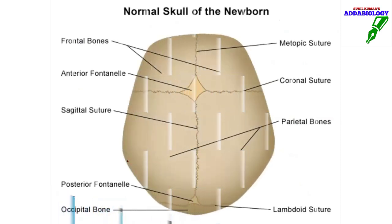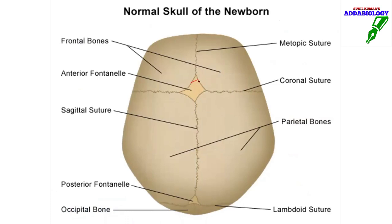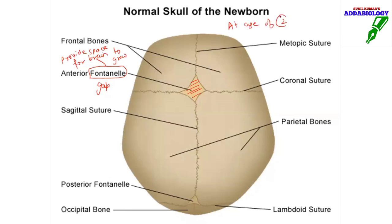Initially, sutures are not formed because the brain has to grow in size. Small gaps are left behind, and these gaps are called fontanels. Fontanels provide space for the brain to grow. As the brain grows, the fontanels expand, and finally at the age of two all fontanels fill up and sutures form. That is why mothers apply oil on a baby's head for the first two years — because of the presence of fontanels.